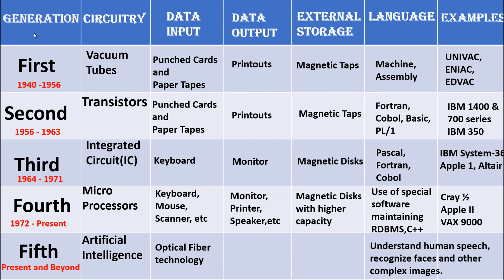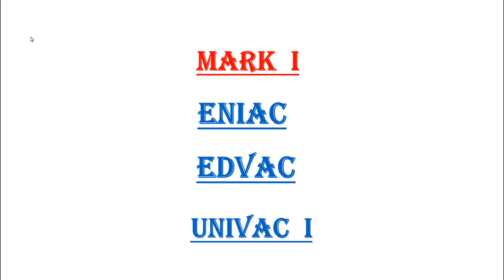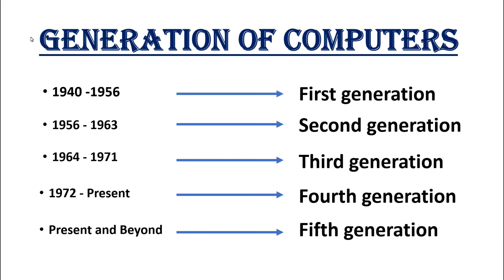Dear students, in this video we learned about three computers: ENIAC, EDVAC, and UNIVAC 1. Then we learned about five generations of computers. Thank you.